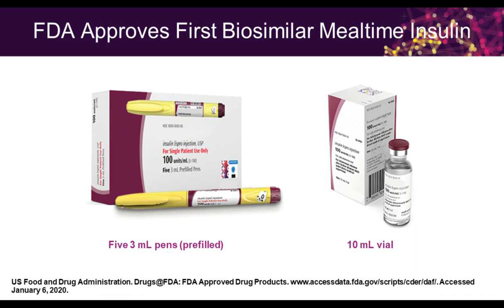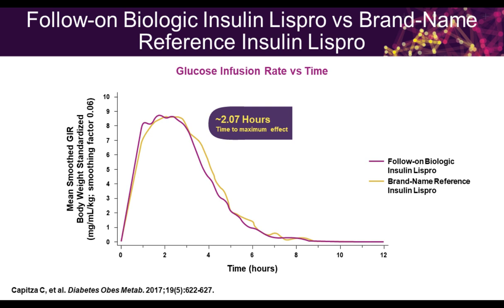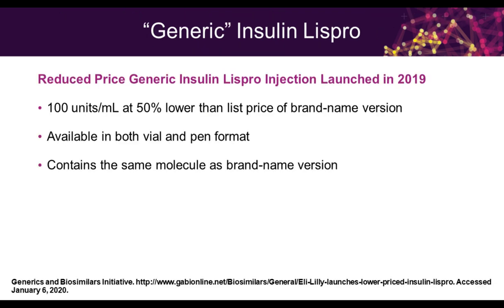We now have a rapid-acting insulin biosimilar — this is insulin lyspro, called Admelog. It actually comes as both a pen and a vial. Very much like with the glargine, if you do the PK/PD studies, you see that it's very similar in terms of how it acts. When I've switched patients from one to the other, I personally haven't seen clinical differences, so I'm comfortable switching patients. This came out last year and is less expensive, but again, if patients are buying cash, they can look into patient assistance programs to help price different medications, because we really want to get patients on the insulin they need and not have to ration it.